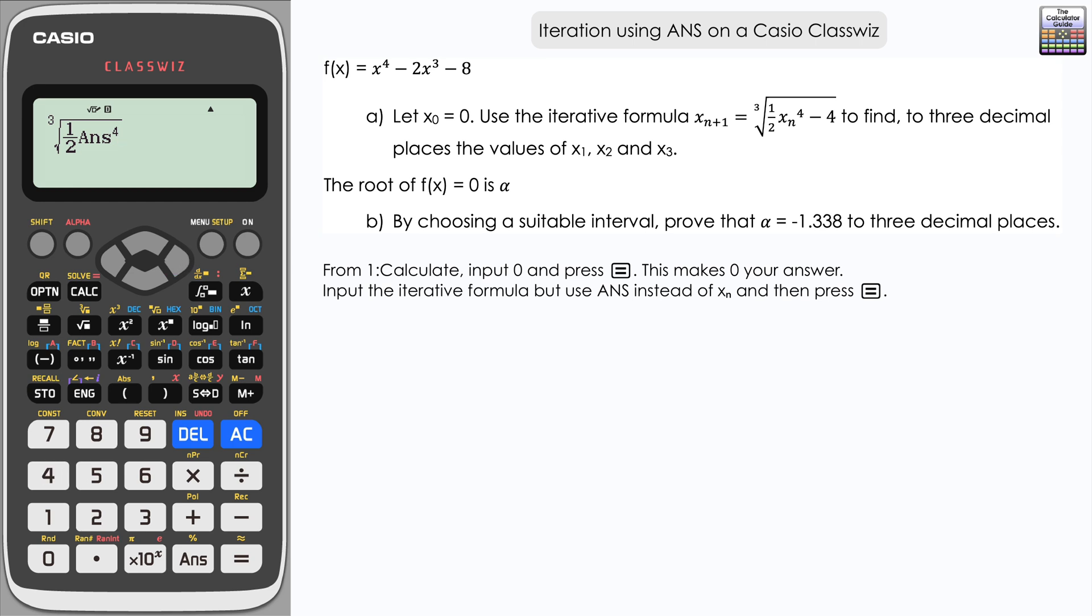To the power 4 minus 4. What will happen when we press equals is that it should use 0 where we have ANS there and get us our next iteration, which is x1. So here we have negative 1.587 to 3 decimal places. Now what should happen automatically is if we just press equals again, the calculator will use that value in our iterative formula to get the second iteration. If we just press equals, here we have the second iteration: negative 0.938 to three decimal places.